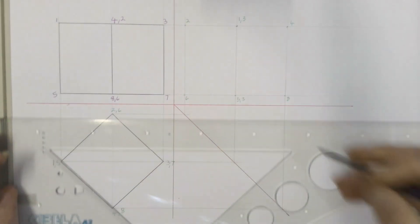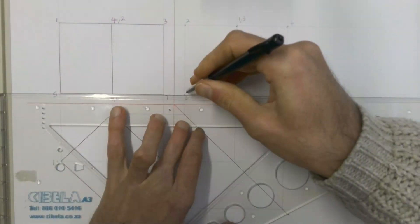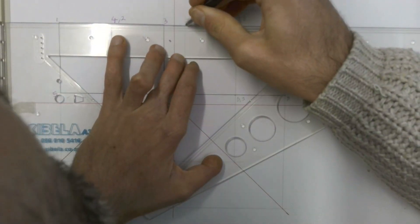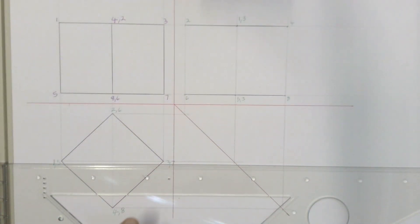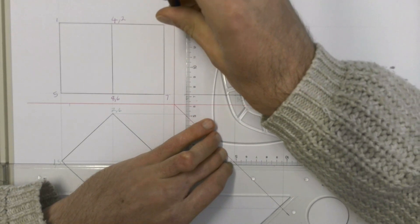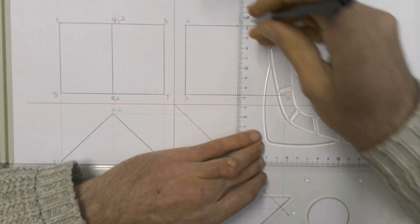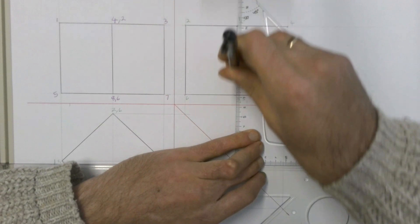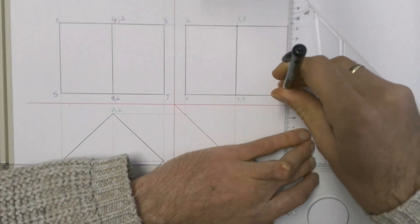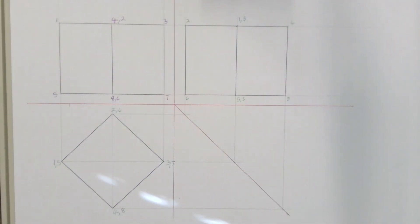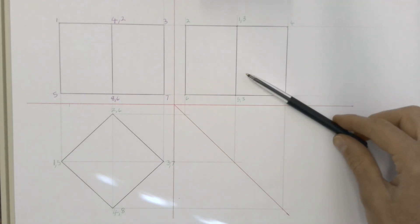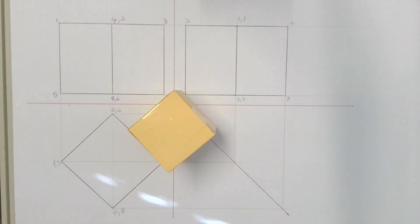To complete the left view we simply join up each of the lines, and we can clearly see what that left view looks like. And there we go — a clear front view, top view and left view in first angle orthographic projection of our prism.